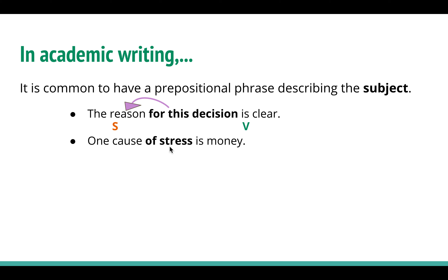In the second example: 'One cause of stress is money.' The prepositional phrase 'of stress' is in the black. The subject is 'one cause' and the verb is 'is.' The prepositional phrase describes the subject. 'One cause of what? One cause of stress is money.' We often use these kinds of sentences when writing a topic sentence for a body paragraph.